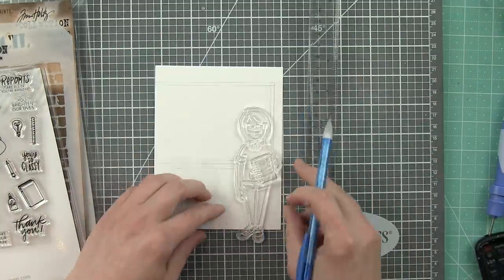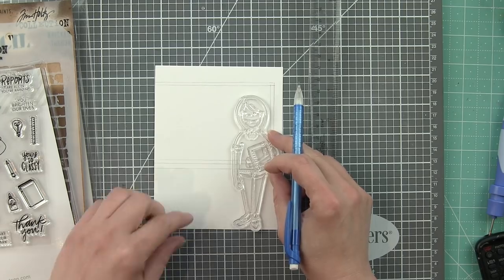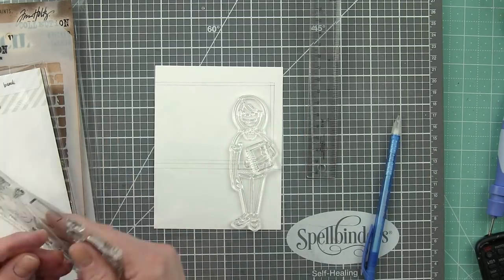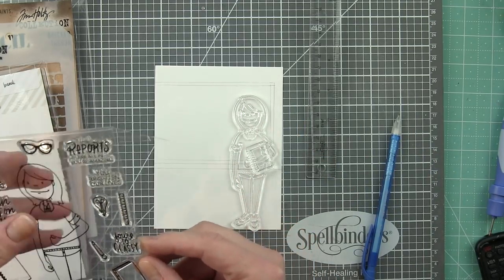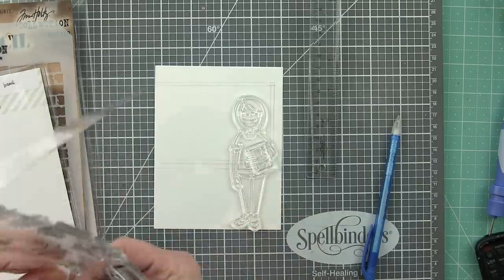Now I did draw in this other little line here because originally I thought I might do like a little counter and I got to thinking, wow, I have got way too much going on. So kind of ignore that last line at the bottom.